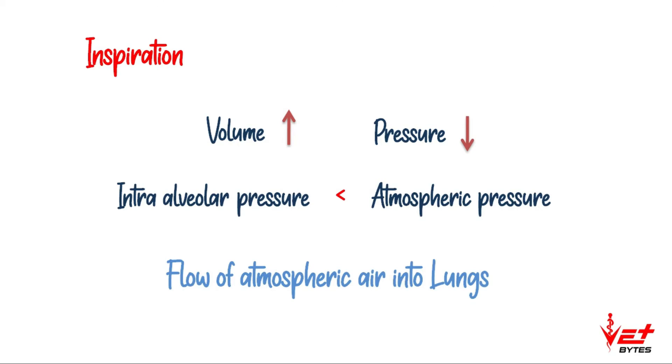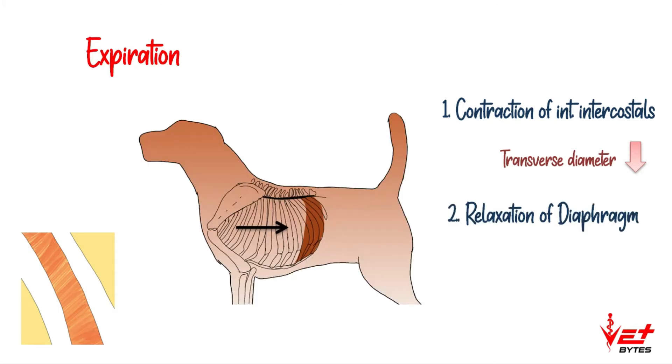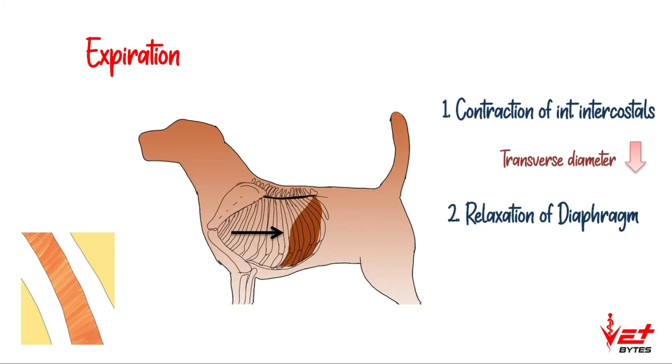The next phase is expiration, which is outflow of air from lungs. Contraction of internal intercostals causes inward and downward movement of ribs, and hence the transverse diameter of the thorax decreases. Contraction of abdominal muscles forces the diaphragm and causes its relaxation. The diaphragm returns back to its original position and hence longitudinal diameter decreases.